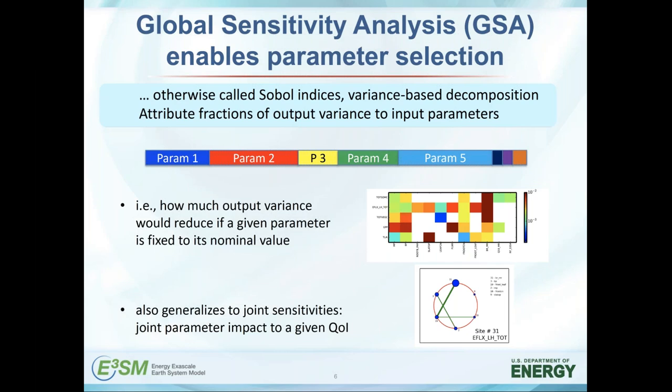What it means is: if I had to fix one of those parameters, how much would the overall output variance of the prediction reduce? We can get GSA information for a range of outputs and figure out if a parameter does not impact any of them considerably, then we can drop it from the next cycle of surrogate construction. This also generalizes to joint sensitivities — the joint parameter impact to a given quantity of interest. The visual in the lower right demonstrates that the radius of a circle indicates how important a parameter is in GSA, and the width of the edge joining two parameters shows how important their joint impact is.